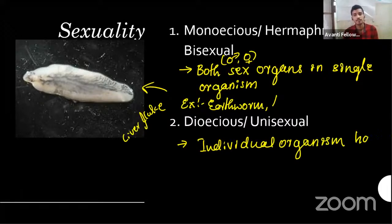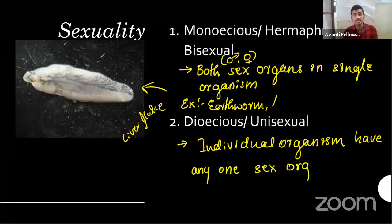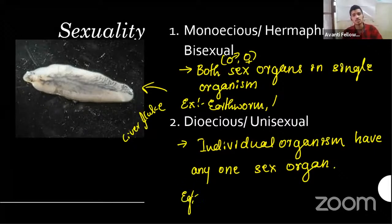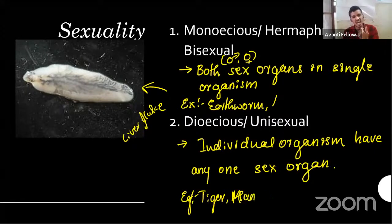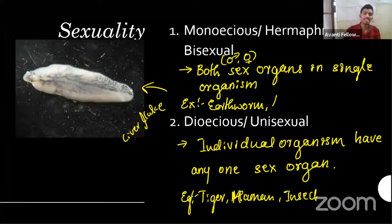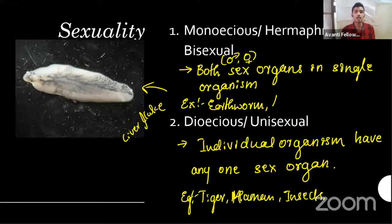An individual organism has any one sex organ — either it will be male or it will be female, not both. Examples: most chordates, tigers, humans. Most of them are dioecious in nature. Dioecious means two organisms are needed for reproduction — one male and one female. Unisexual means the same thing: a single organism having a single sex organ.